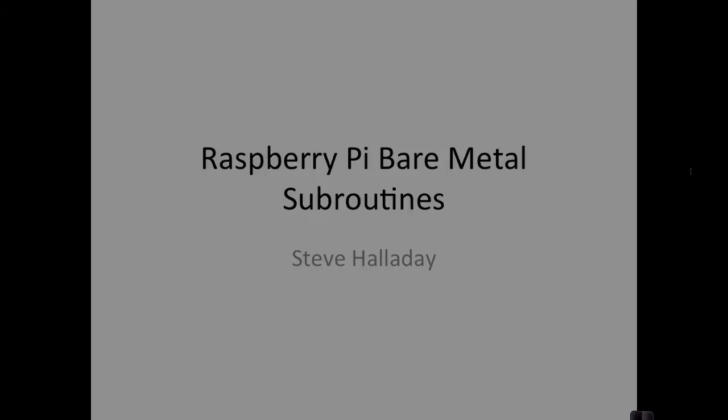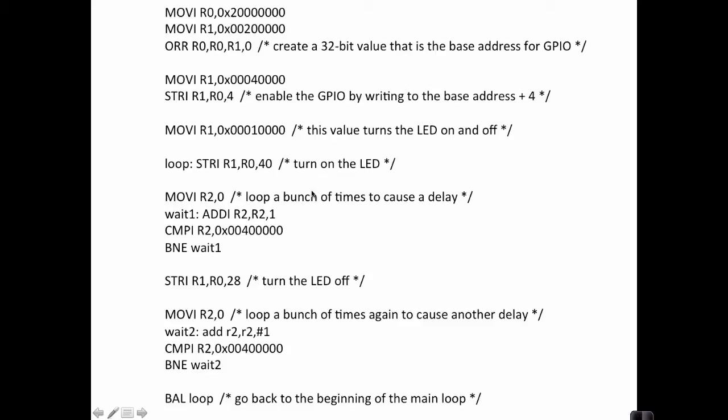In our previous video, we wrote this program that blinks the LED. This is a program that our assembler will consume. It works pretty well, but we have one complaint about it. This code here, as you may recall, is the same as this code here, with the exception of the labels being a little bit different. It's generally considered bad form to have duplicate code in your program, so let's see what we can do to try and eliminate this code by extracting it into a subroutine.